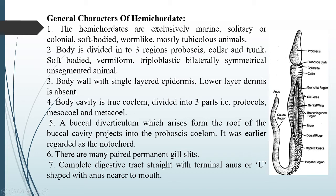The name 'Hemi-chordata' means 'half-chordate' — a few chordate characters are present in these animals. One important character is the buccal diverticulum, a rod-like hard structure that arises from the roof of the buccal cavity and projects into the proboscis coelom. It was earlier regarded as a notochord, but it is not a true notochord — it is the buccal diverticulum.